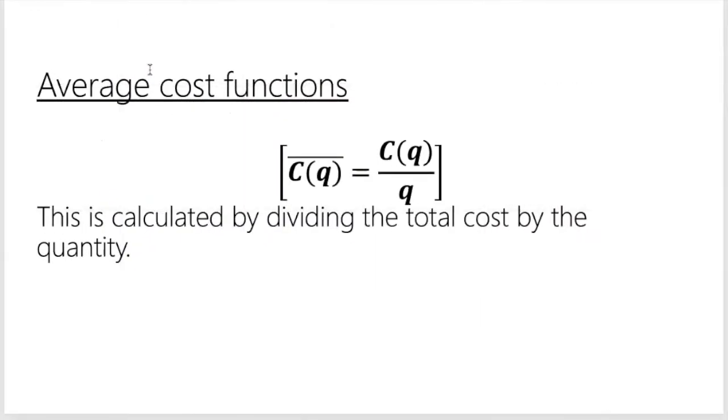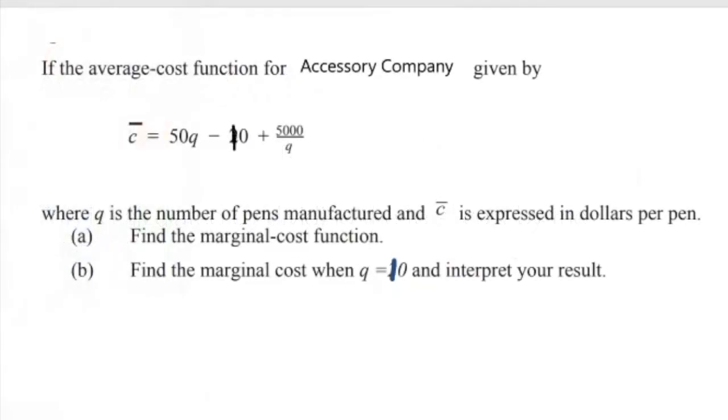The average cost function is coming from the cost function. The symbol C with a line above it is the symbol for average cost and equals total cost divided by the quantity. And that's when we find the average cost. So the next question I have here, I'll be looking at having the average cost to find the marginal cost function.